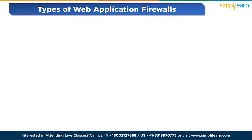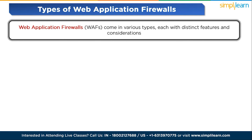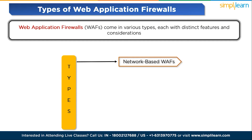Web application firewalls come in various types, each with distinct features and considerations. The first type is network-based WAFs. These are hardware-based solutions installed locally on premises in dedicated appliances. This proximity to the application reduces latency, enhancing performance, and major vendors facilitate large-scale deployment by allowing replication of settings across multiple appliances.